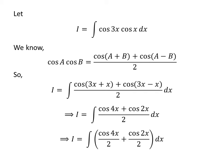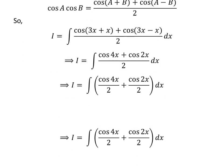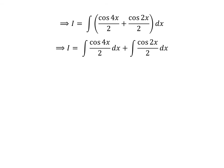The integrand can be expressed as the sum of two fractions. So, i is equal to the integral of cosine of 4 times x upon 2, plus cosine of 2 times x upon 2, with respect to x. Applying the linearity property of the integral gives us i equal to the integral of cosine of 4 times x upon 2 with respect to x, plus the integral of cosine of 2 times x upon 2 with respect to x.